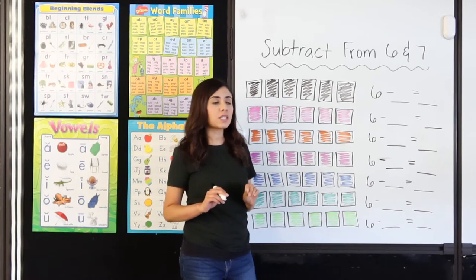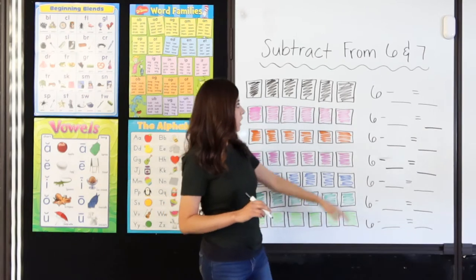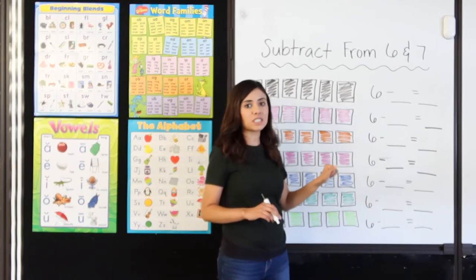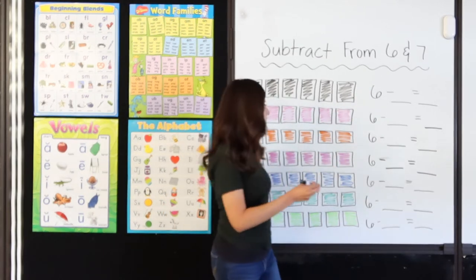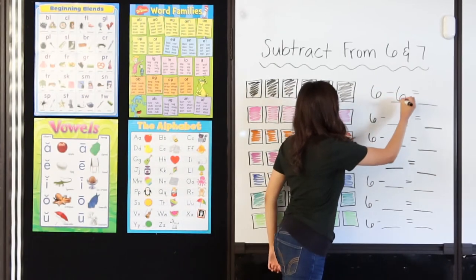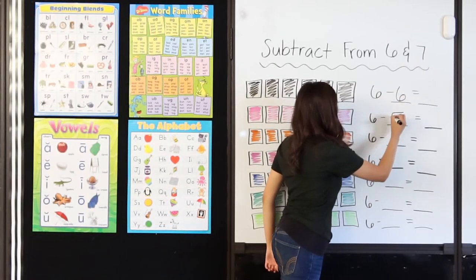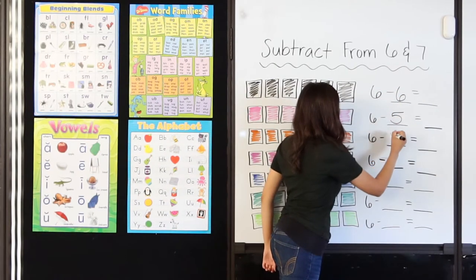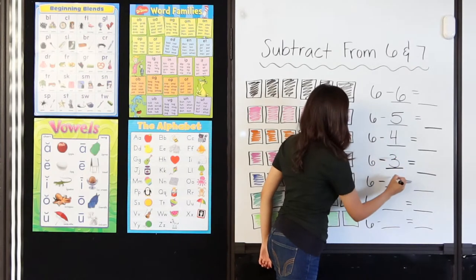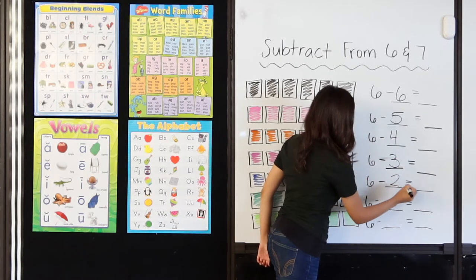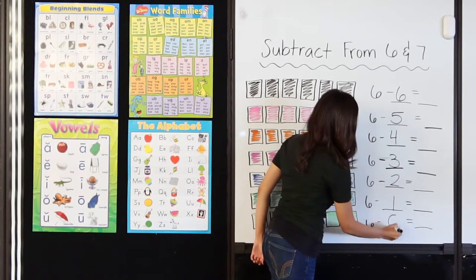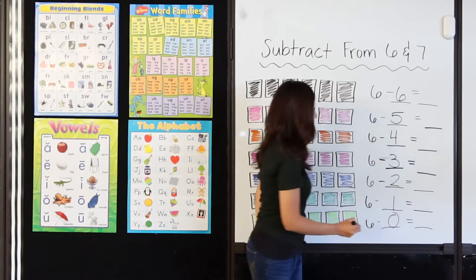What we like to do in class is count from 6 down to 0. Ready? Alright: 6, 5, 4, 3, 2, 1, 0.